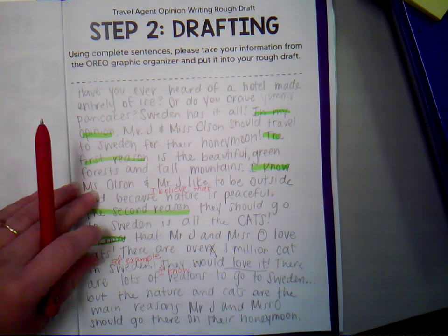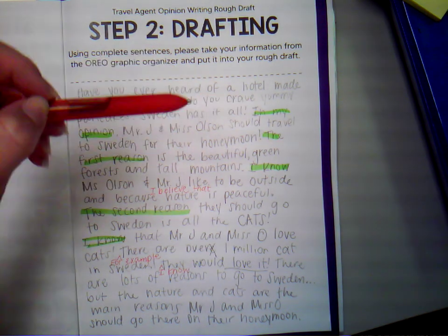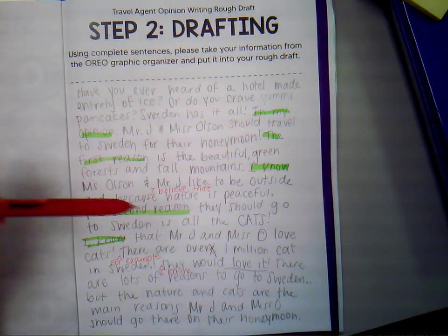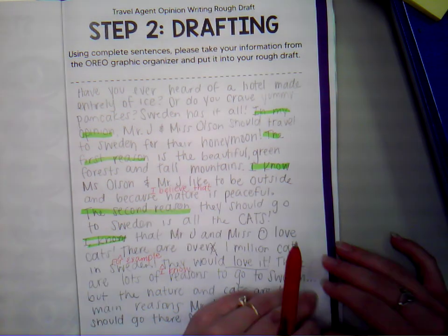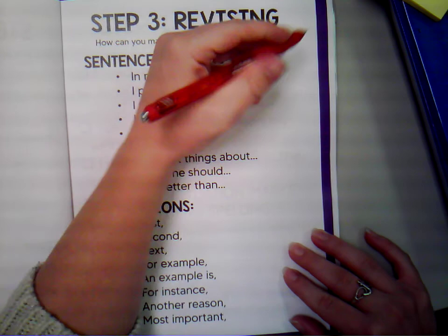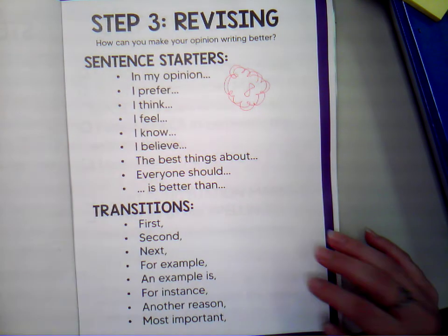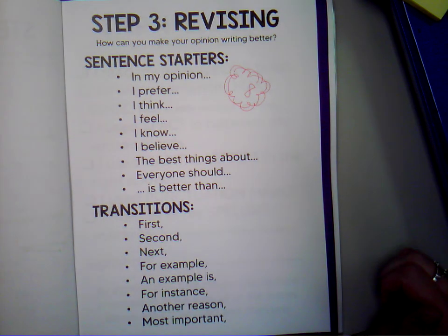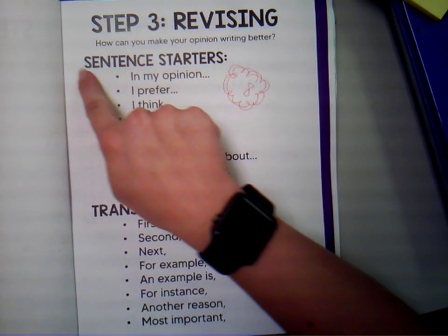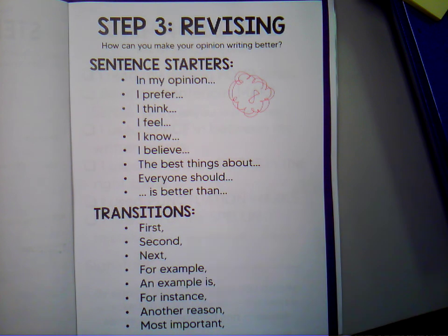I'm going to count how many sentence starters and transitions I have to make sure I have enough. I count one, two, three, four, five, six, seven, eight — I put eight in here. I want you to try to put as many of those as you can. If you do eight, that's great. If you do six, that's great. If you do ten, that's great as well. We're focusing on adding in those sentence starters and transitions to make your writing better.